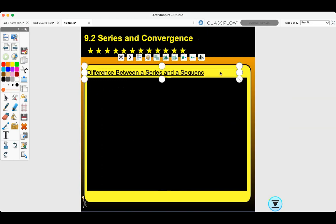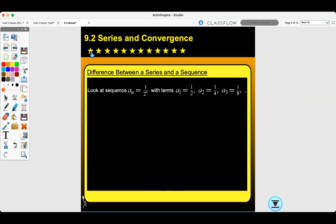Difference between a series and a sequence. Look at the sequence a_n equals 1 over 2 to the n. The first term is 1 half, the second term is 1 fourth, the third term is 1 eighth, and that continues on.